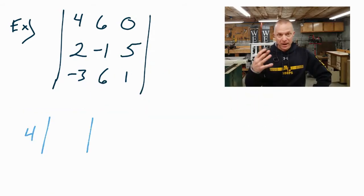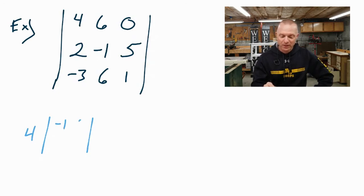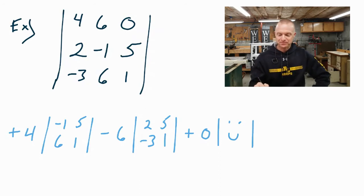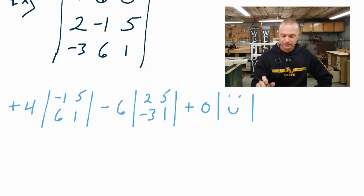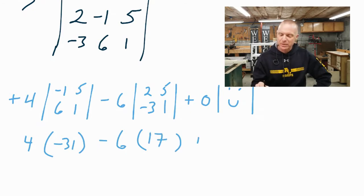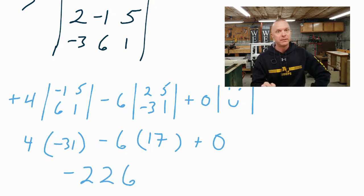All right, if you expanded with the first row, we end up with a coefficient of 4 and a minor matrix of negative 1, 5, 6, and 1. I'm going to go ahead and put a plus sign there right now. And in a similar manner, I'm going to put this minus sign here. Minor matrix of 2, 5, negative 3, and 1. And then the last coefficient is 0. Wait a minute, a coefficient of 0? It doesn't matter what I put in that 2x2 matrix. You'll find out that 0s can be very helpful when it comes to finding a determinant. We should end up with a determinant of negative 31. Here we should end up with a determinant of 17. And of course the last one, we know that it's going to be 0 no matter what. So how'd you do? You should have gotten negative 226 for that determinant.